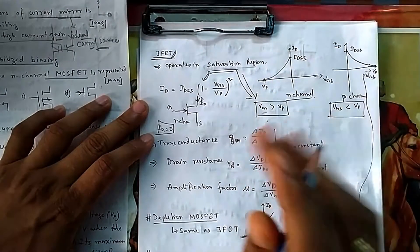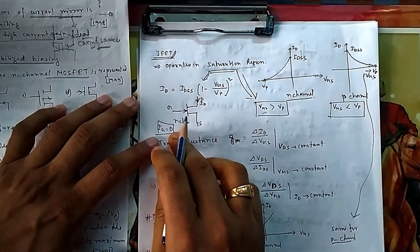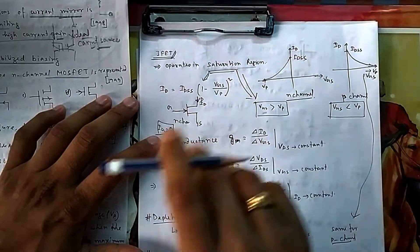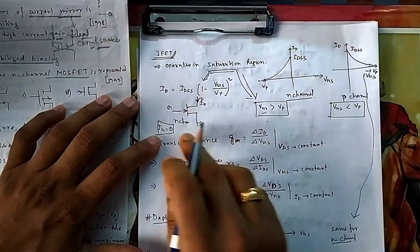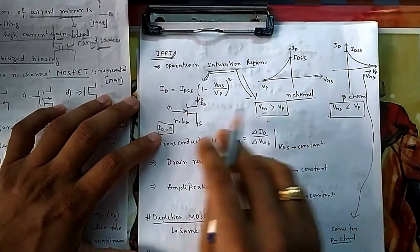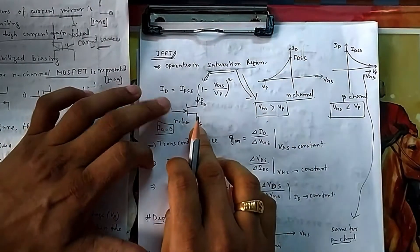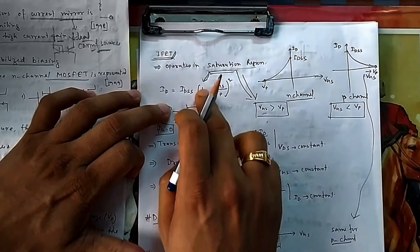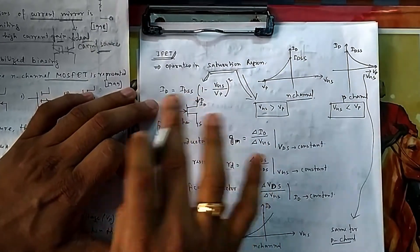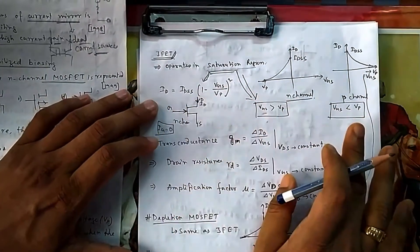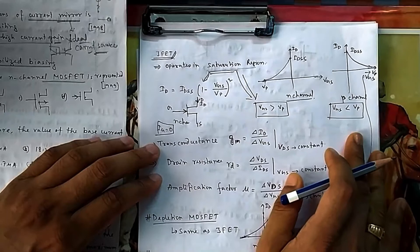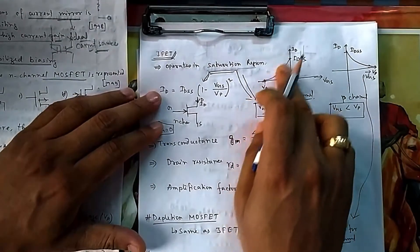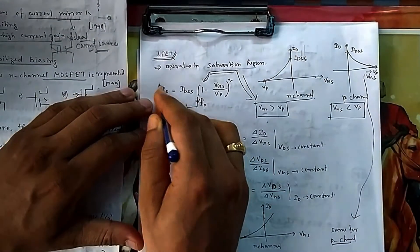Unlike a transformer where gate current was flowing, in JFET no current flows through the gate because it is a voltage-controlled device. You apply voltage across V_GS and you get drain current — no gate current flows, and you must be clear about that.